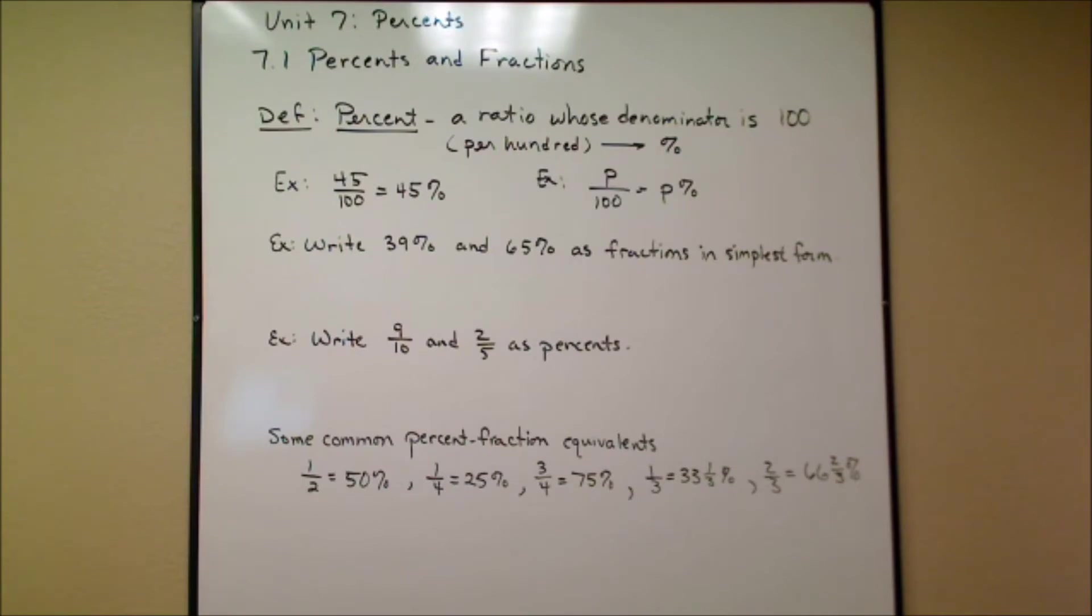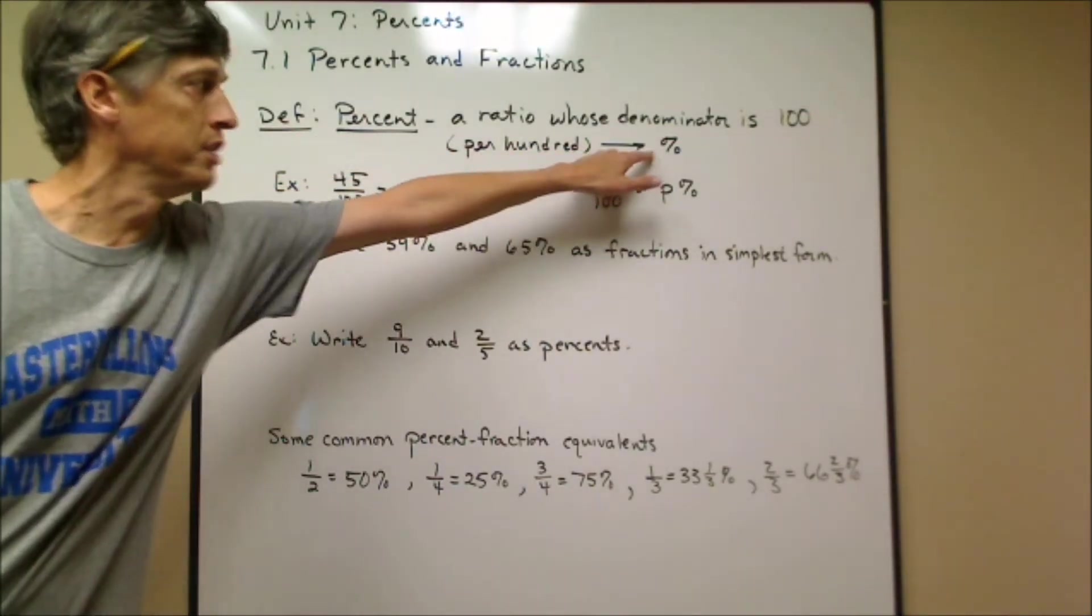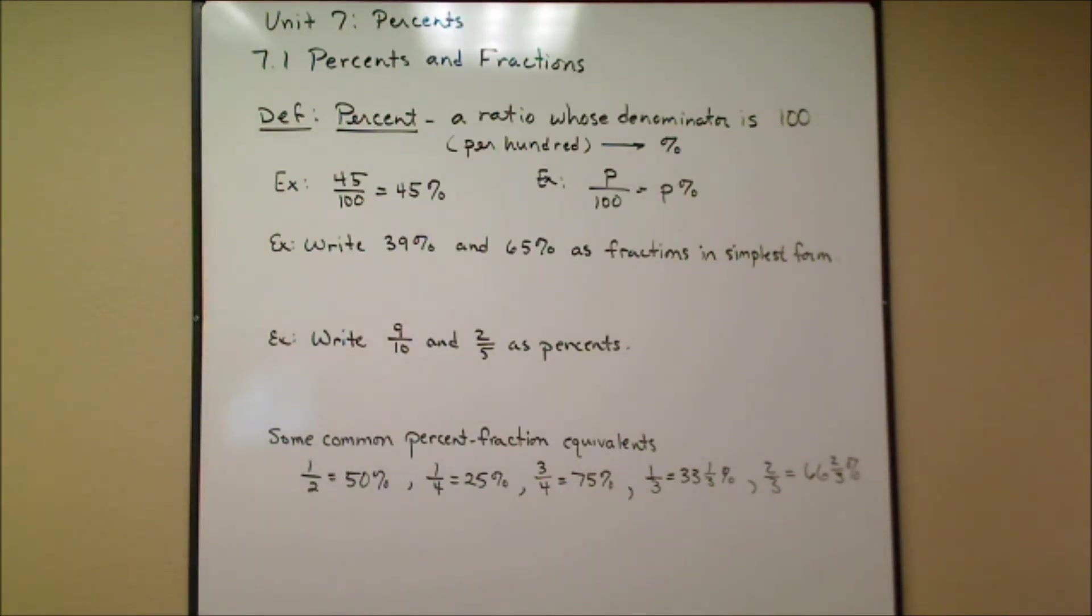A percent is a ratio whose denominator is 100. 'Cent' comes from the same Latin word that we get 'century,' which is 100 years, or 'cents,' like there's 100 cents to a dollar, or even the ancient Roman centurion, who was a Roman officer in charge of 100 men.